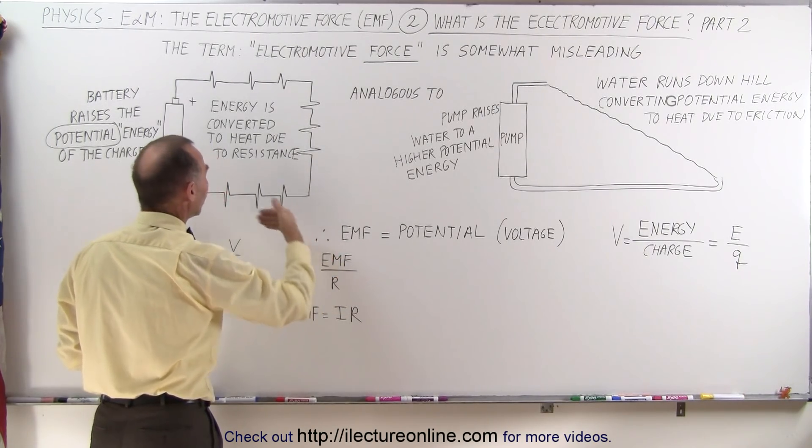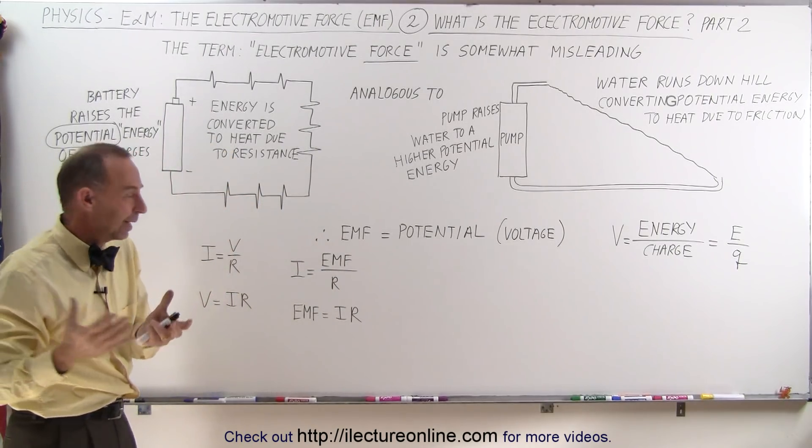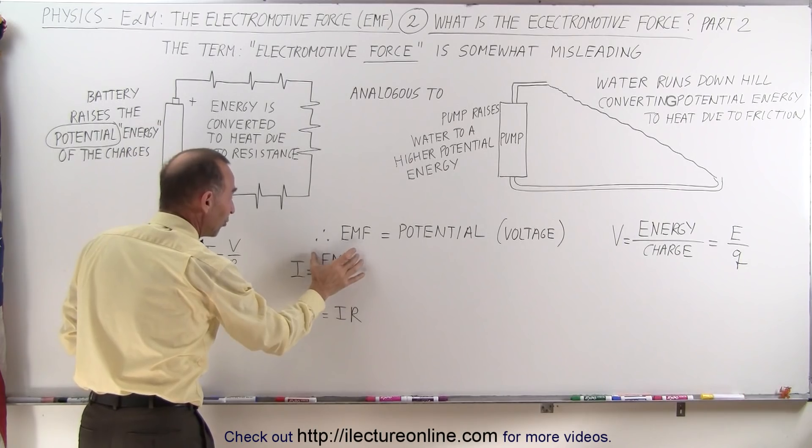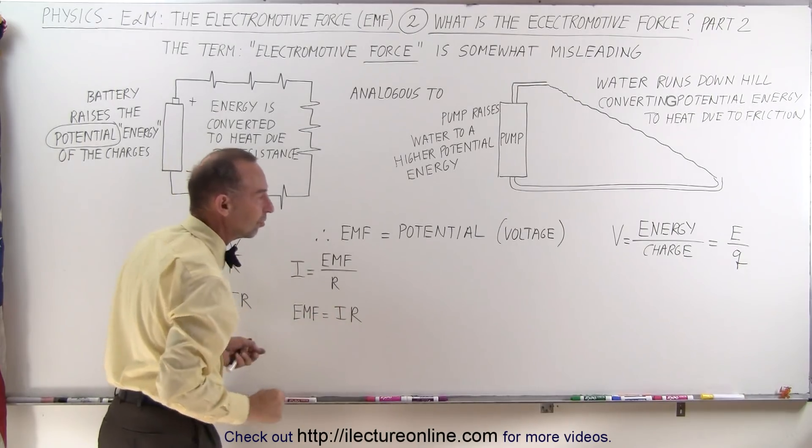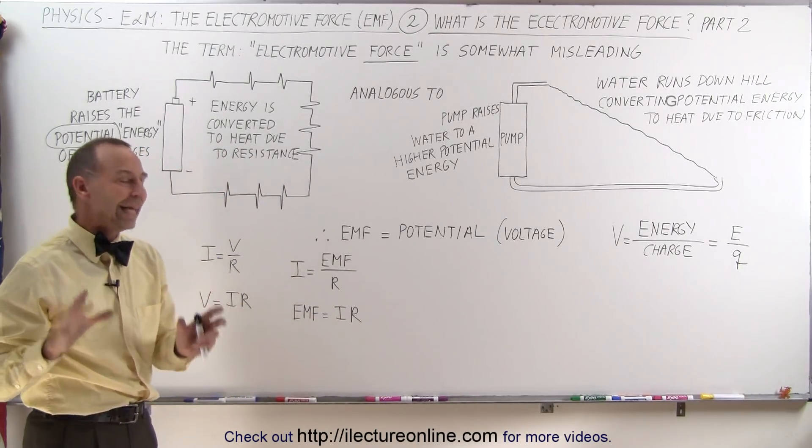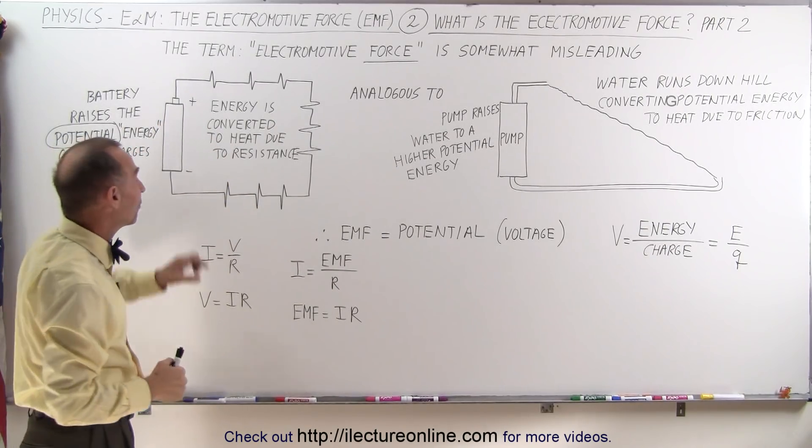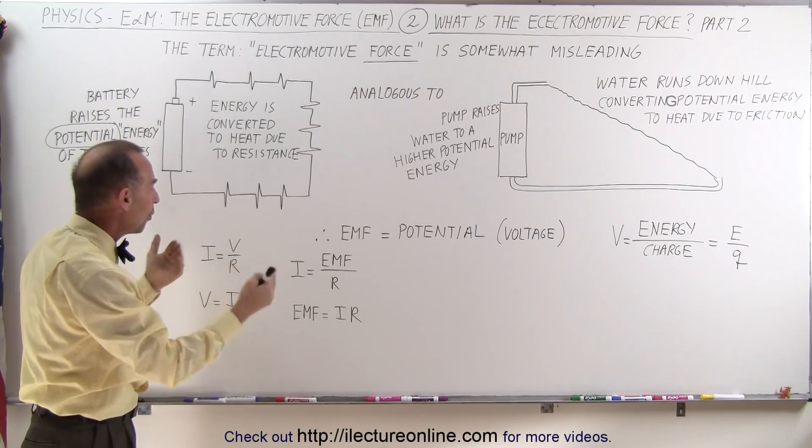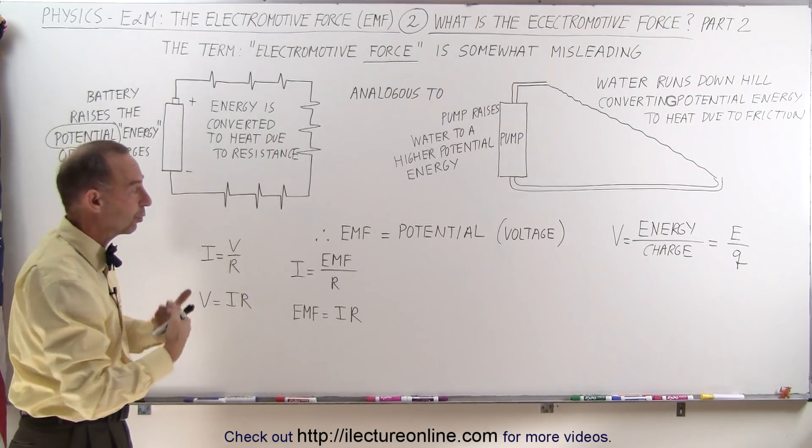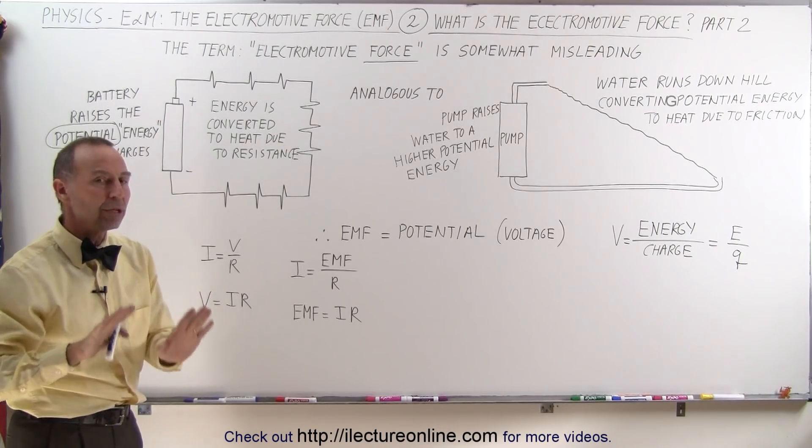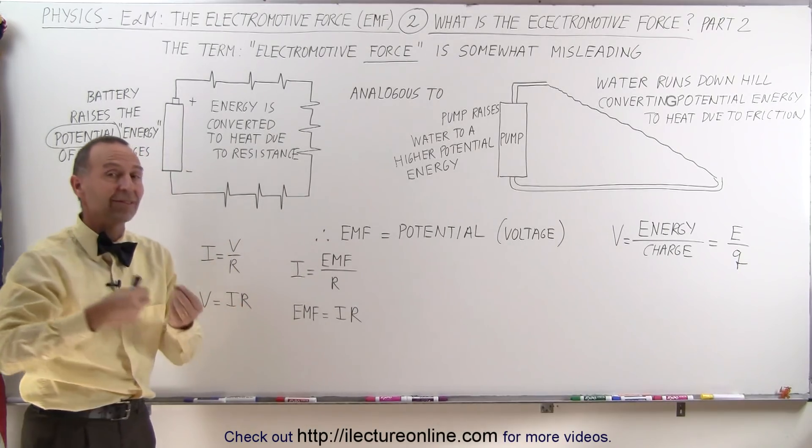Something causes an electromotive force to exist, and essentially EMF is really the same as voltage. Therefore, the EMF in the circuit equals the current times the resistance. We'll see later that batteries have internal resistances which affect the equation between voltage and EMF. But for now, it's sufficient to think that voltage and EMF are basically the same thing.